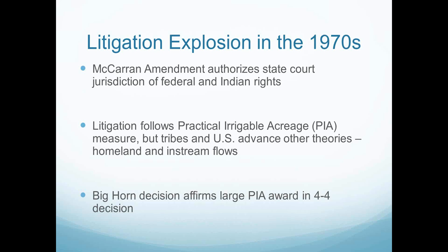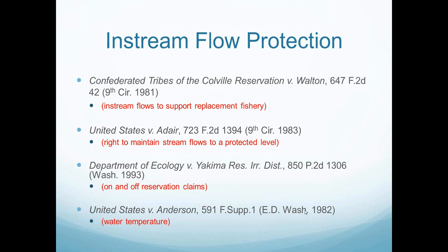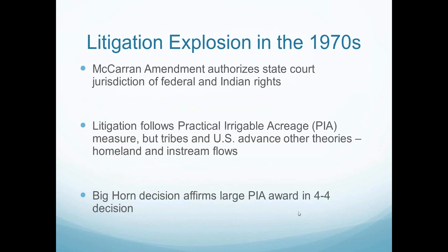A number of states commenced general stream adjudications. The Wyoming Supreme Court, in 1989, in the Big Horn adjudication involving the tribes of the Wind River Reservation, went to the U.S. Supreme Court, which affirmed a large PIA award in a four-to-four decision, but rejected any in-stream flow water rights. This was characteristic of state courts generally being hostile to tribal rights in their own forums.